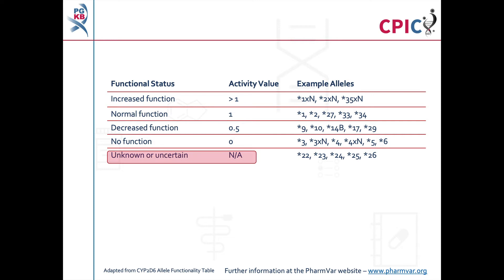Be aware that some CYP2D6 alleles have an unknown or uncertain functional status and should be interpreted with caution on a genetic test. In addition, an important caveat for all genotyping tests is that any alleles which are not detected in the assay are designated as star 1. This can include rare increased function, reduced function, and non-functional alleles, which are not routinely screened for in some genotyping tests.